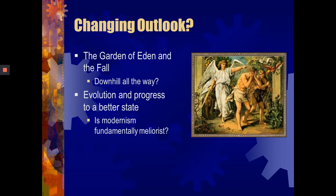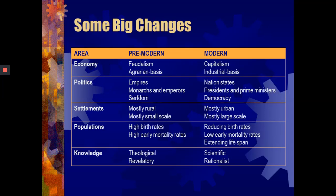To understand whether things are getting better or worse, we really need to break it down: is it technology, political liberties, standard of living, healthcare, or environmental issues? Some things may get better and others worse. The central question is whether modernity is an improvement on the past or a disaster — or a bit of both. This is where we can open up to reflection and discussion in the Microsoft Teams Q&A.